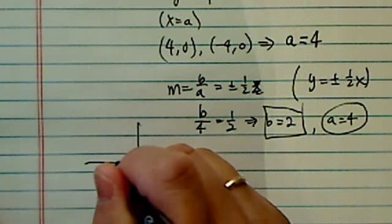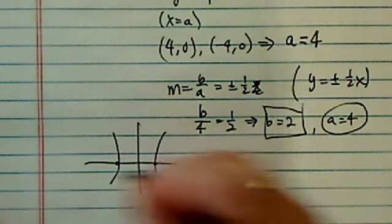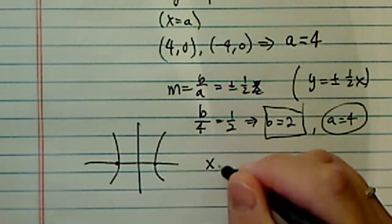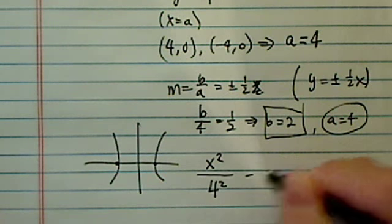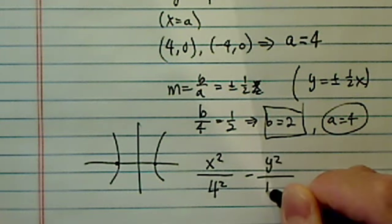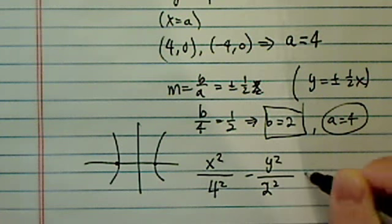And we know the curve, once again, vertices is here, so it has to rest on the x-axis. And positive goes first. So x squared over 4 squared minus y squared over b squared, which is 2 squared, equal to 1.